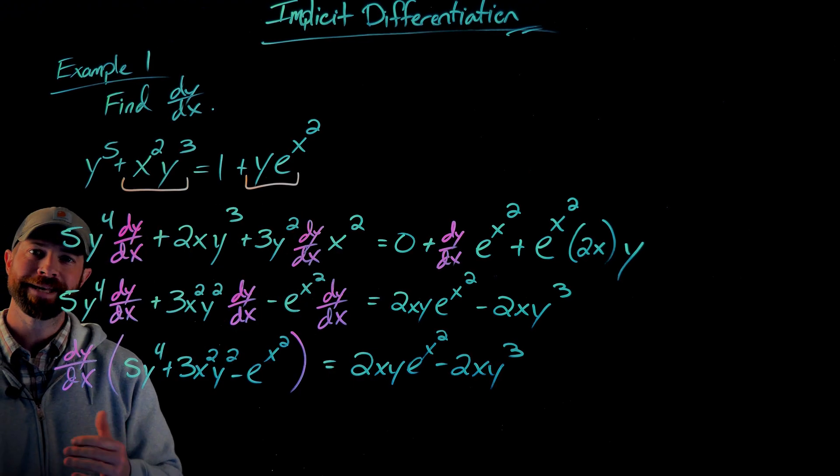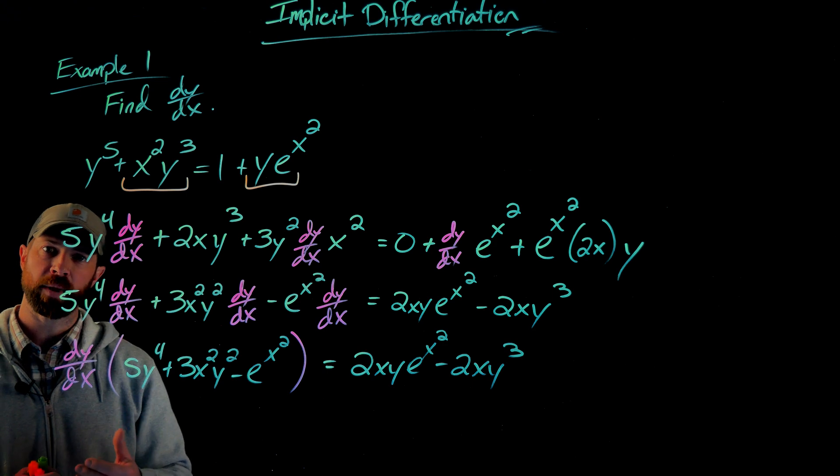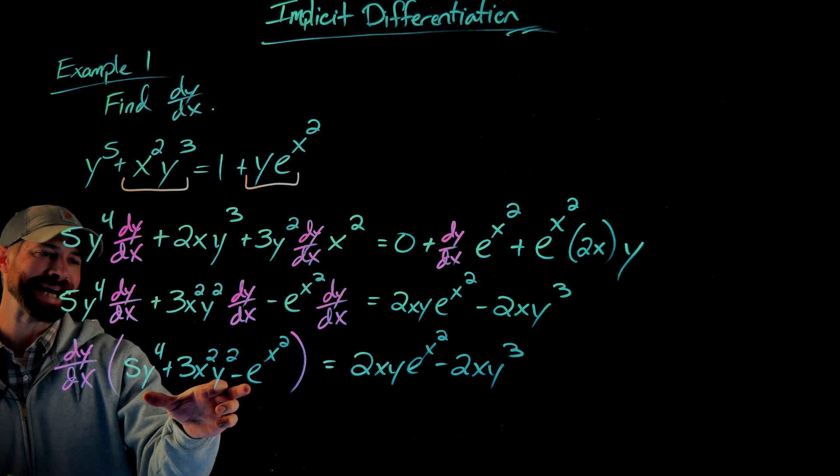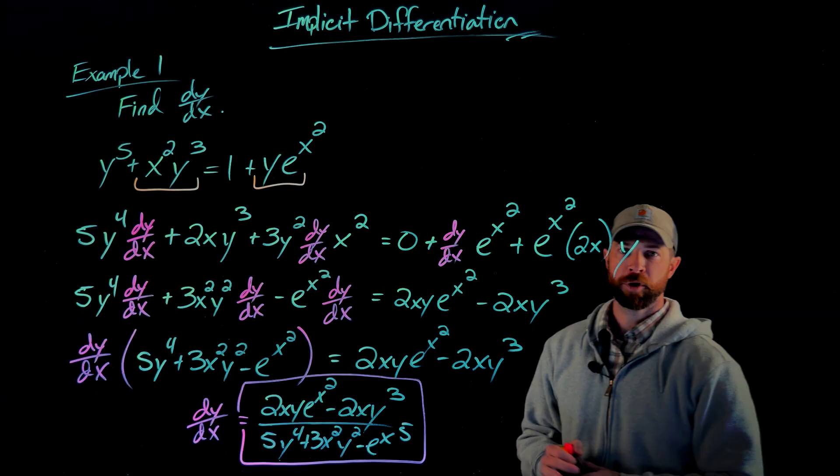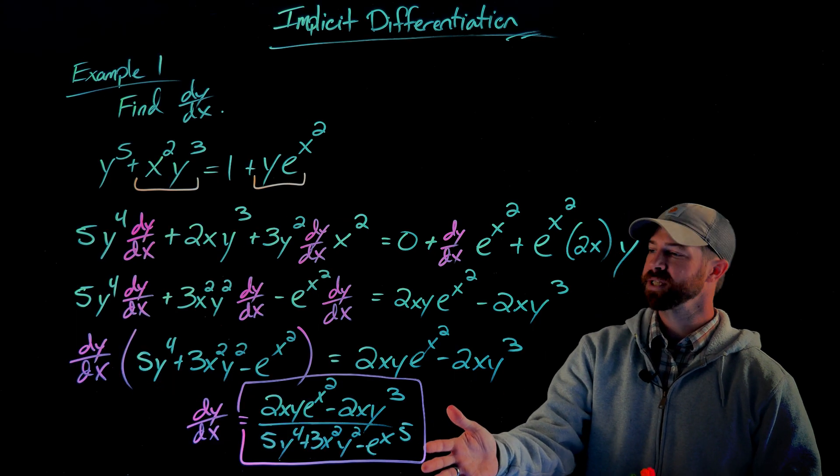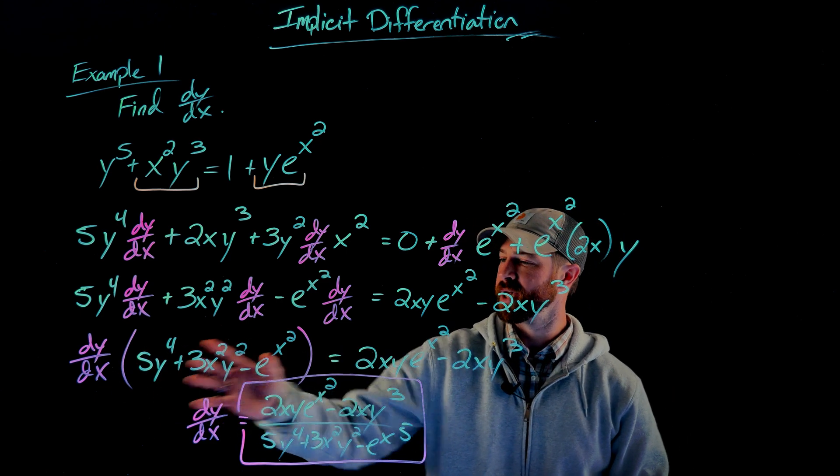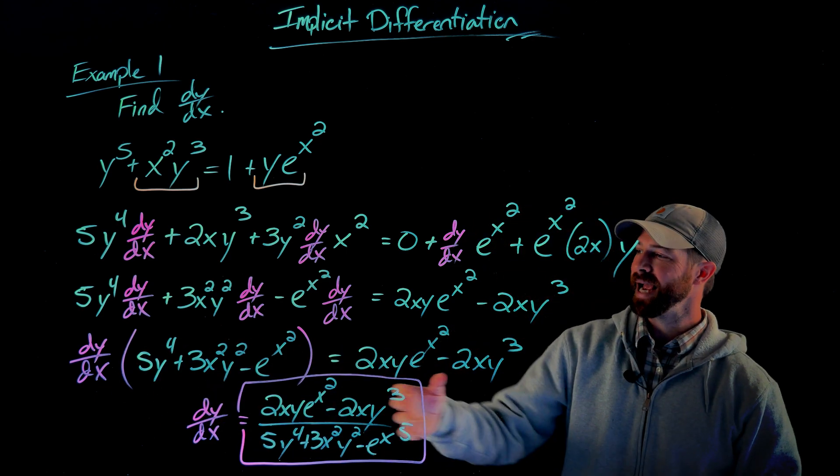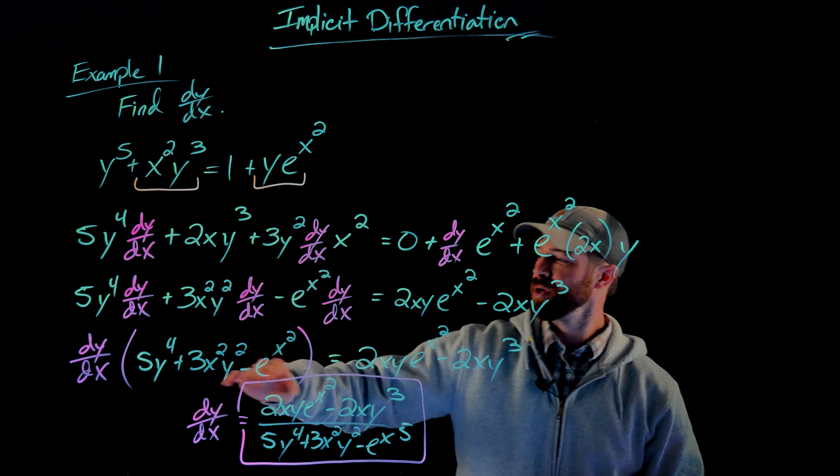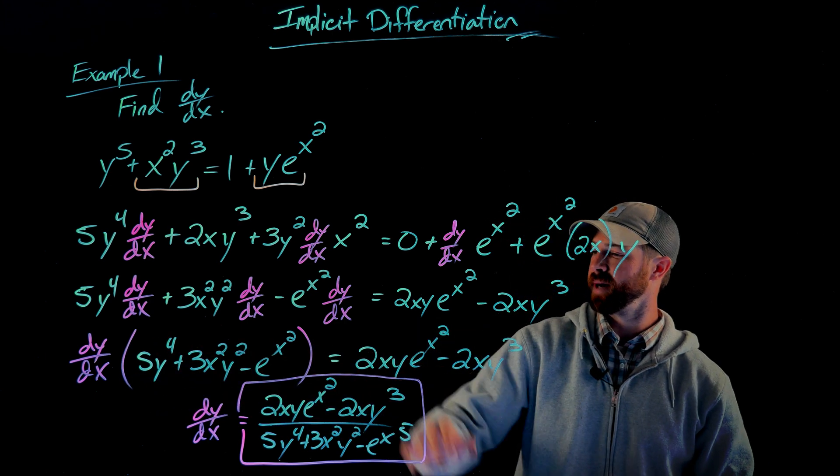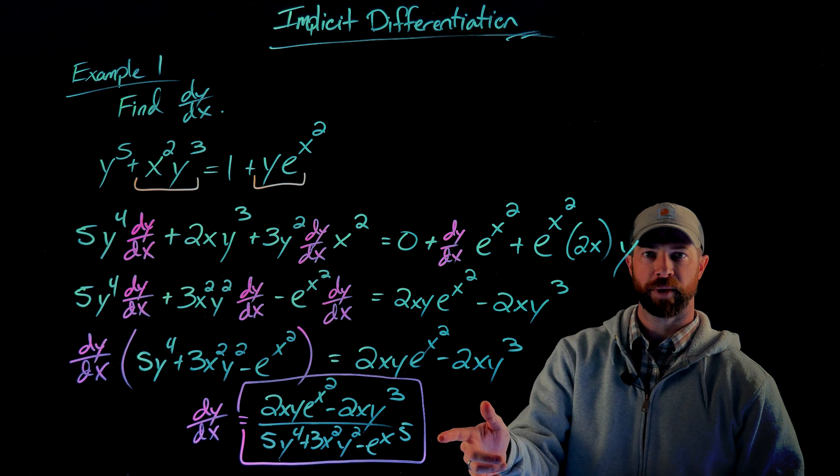And then my final step that I need to do to get dy/dx by itself now is simply divide both sides by this expression. So this right here would be the result of taking this expression right here, dy/dx times this jazz equals this, dividing everything by this expression. When I divide by that, it cancels this out and this side gets divided by it, leaving me with this result right here.